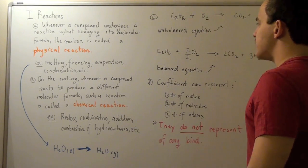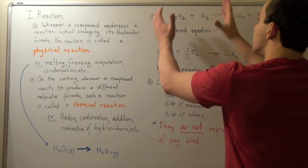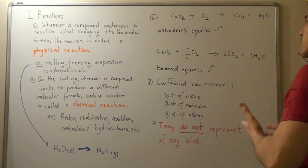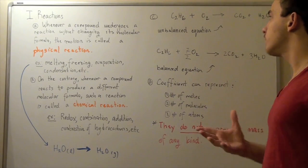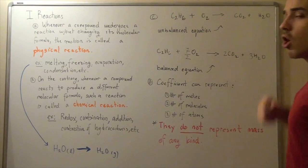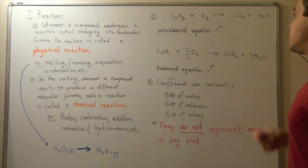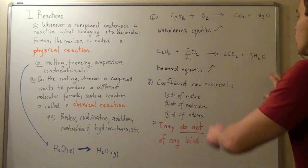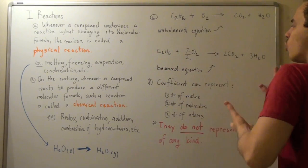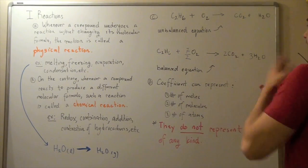To balance this equation, we have to multiply each atom by some number so that the number of each atom on one side equals the number on the other side. Let's begin with carbon. On the left side we have two carbons, while on the right side we only have one carbon. To balance this, we multiply the CO2 by two. That gives us two carbons on each side, so whatever amount of carbons we put in — namely two — we get two back.